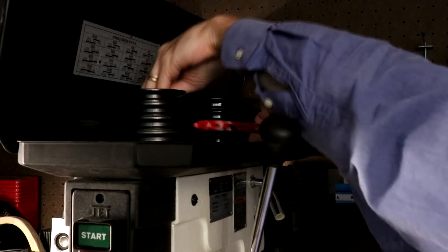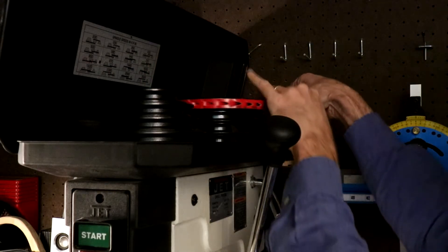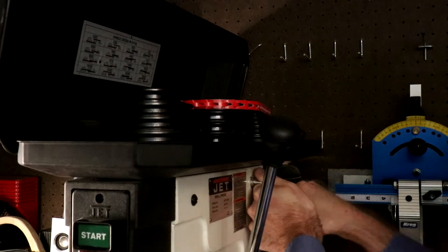Heat is the killer of tools and the diamond core drill is no different. To reduce heat generation, we reduce the speed of the drill press to 200 RPM.